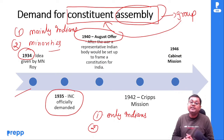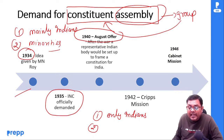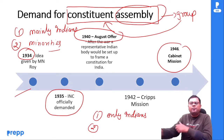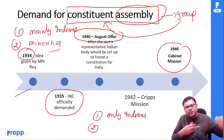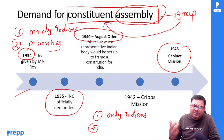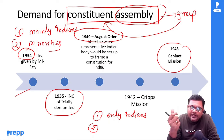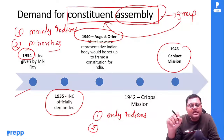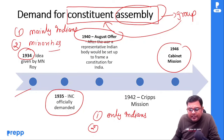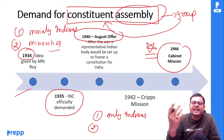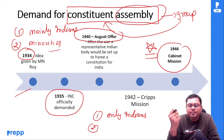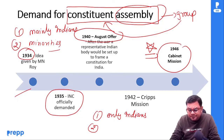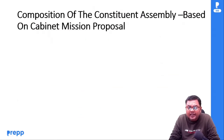Finally 1946 में आता है Cabinet Mission। इसमें proper scheme दी हुई थी कि क्या composition होगा constituent assembly का, किस तरह से वो work करेगी। इसको accept किया गया, और इसी के basis पे India में constituent assembly का establishment होता है। यह भी question आता है in films कि basis क्या था — it is Cabinet Mission plan of 1946।